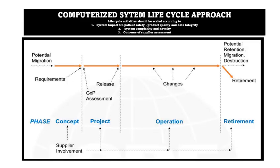When you procure any computerized system, you must follow the life cycle approach to validate that system in a compliant manner. Life cycle activities should be scaled according to system impact on patient safety, product quality, and data integrity. Always keep in mind that you are validating a system that will be used for material testing or product analysis, and ultimately it will impact product quality, patient safety, and the data generated from the system. It is very important that data generated from that system should be accurate and reliable.